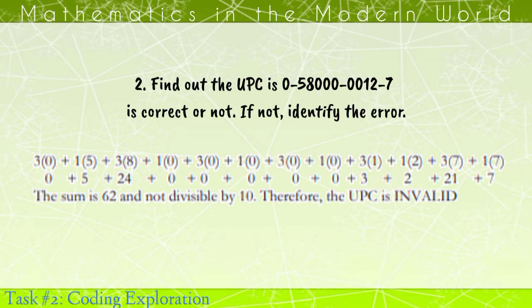To check this code, we need to multiply by the number pattern which is 3-1-3-1-3-1 and so on. After getting the product, we add all the products to get the sum. The sum is 62 and not divisible by 10. Therefore, the UPC is invalid.